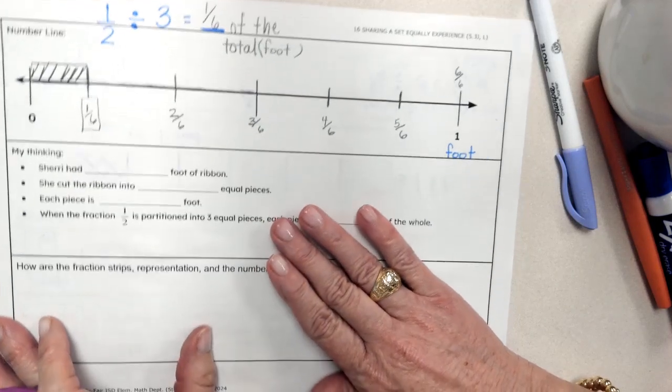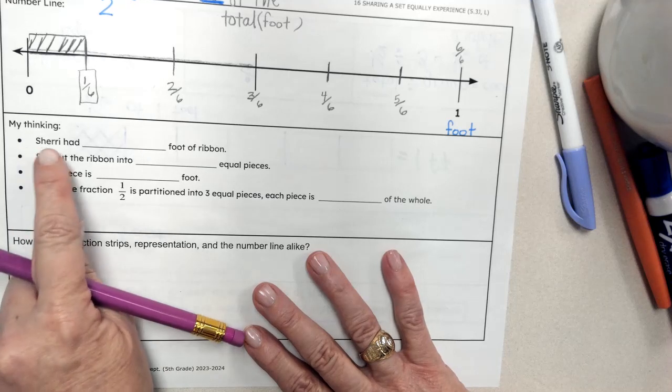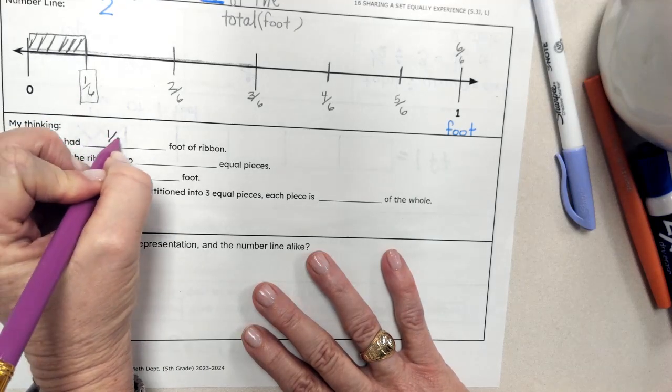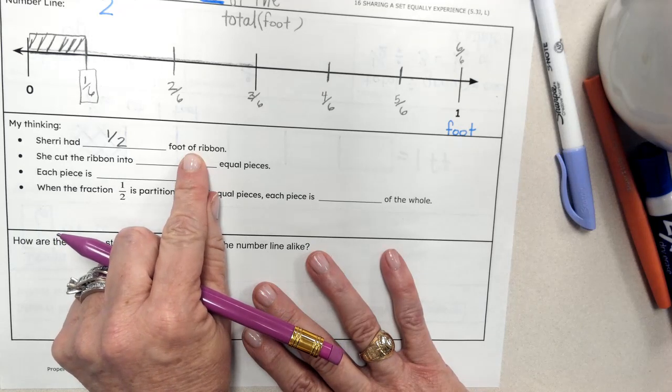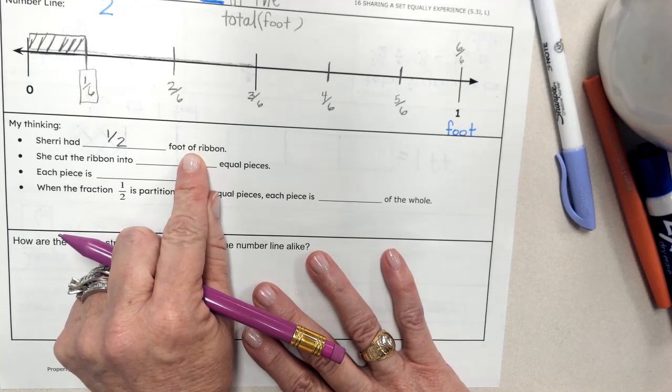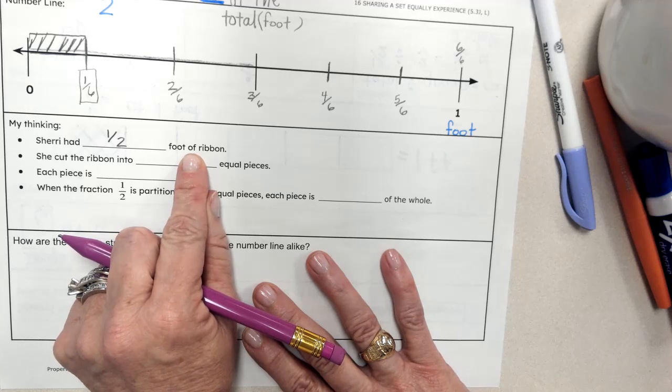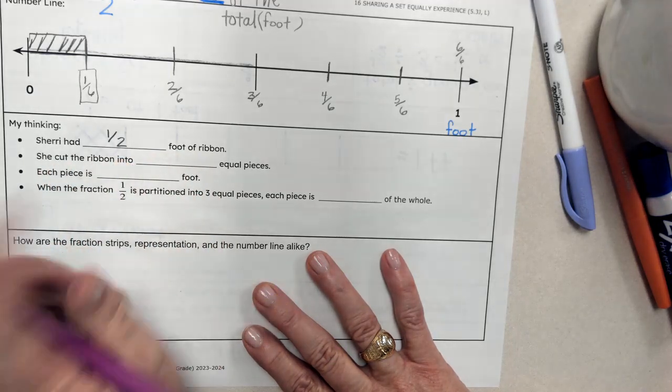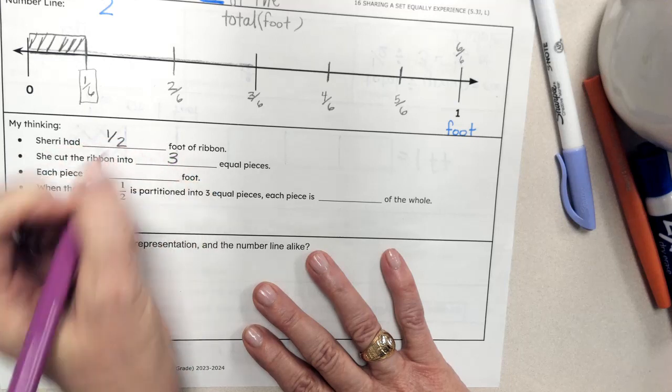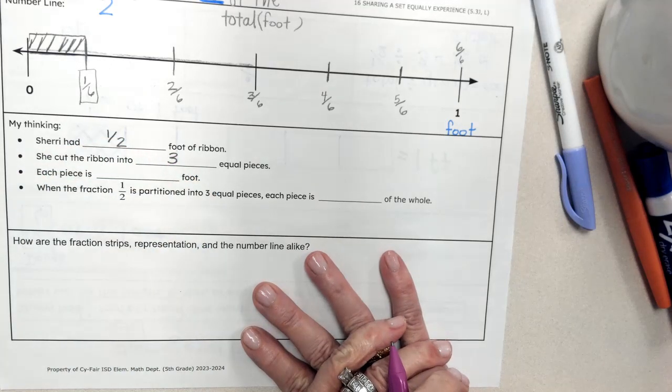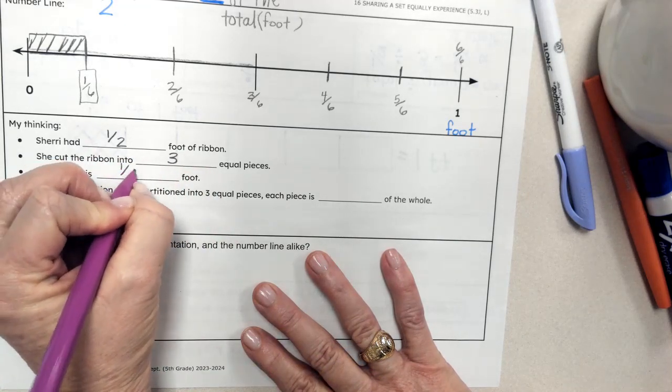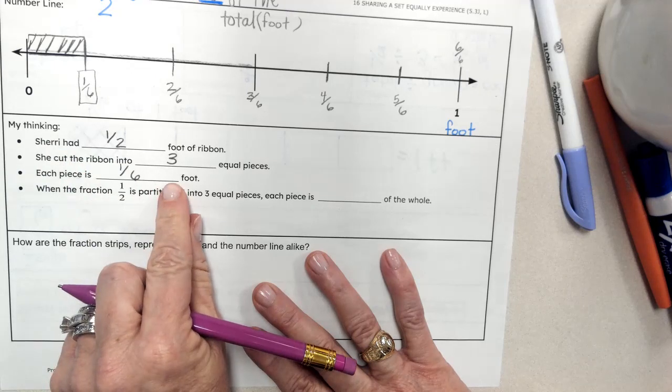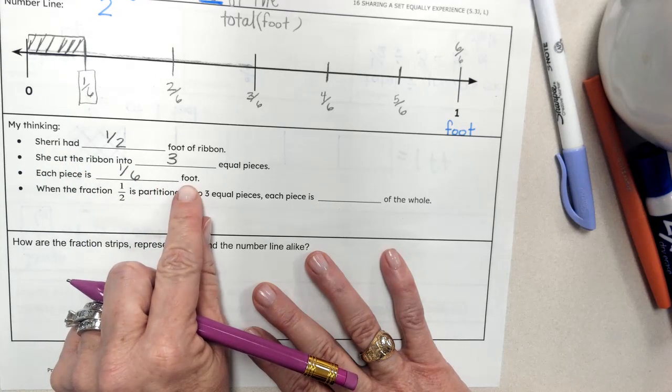And so my thinking is that Sherry had a half a foot of ribbon. Remember, that's what she started with. You always want to start with your total when you're dividing. She cut the ribbon into three equal pieces, and when she cut it into three equal pieces, each piece is one-sixth of a foot, one-sixth of the whole foot.